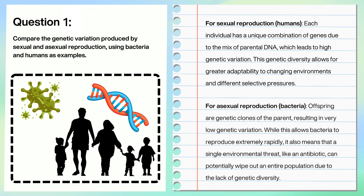For asexual reproduction in bacteria, offspring are genetic clones of the parent, resulting in very low genetic variation. While this allows bacteria to reproduce extremely rapidly, it also means that a single environmental threat, like an antibiotic, can potentially wipe out an entire population due to the lack of genetic diversity.